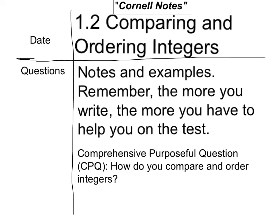In Lesson 1.2, Comparing and Ordering Integers, you are going to go ahead and practice setting up your notes Cornell style. That means you're going to have this line here, about a third of the way over from the left side, and then this line here, and it separates it into these four quadrants.